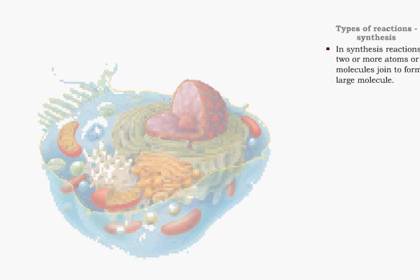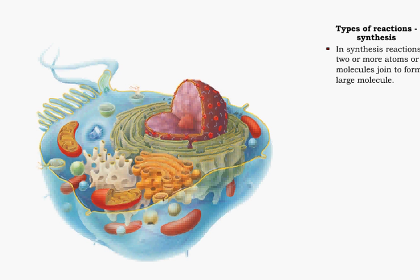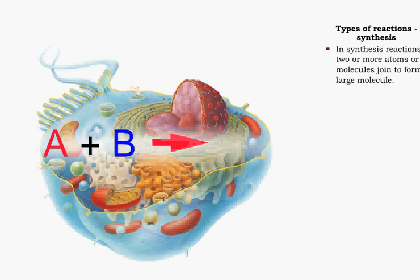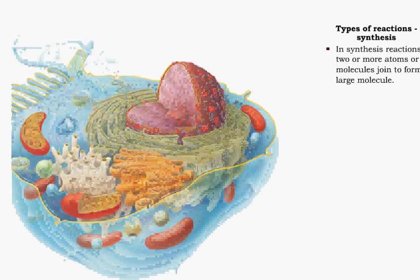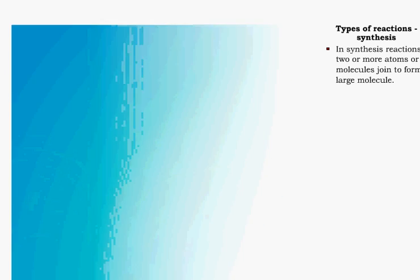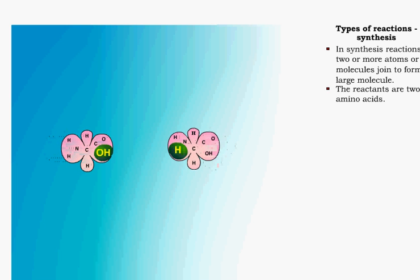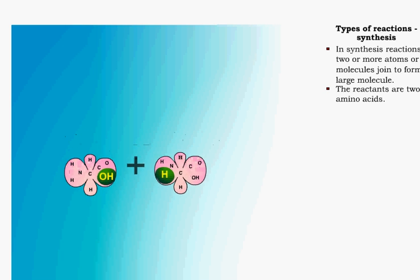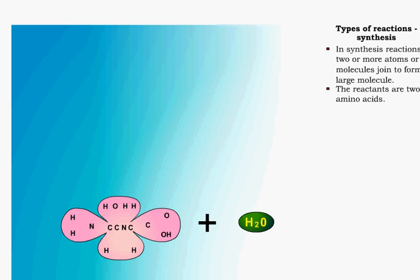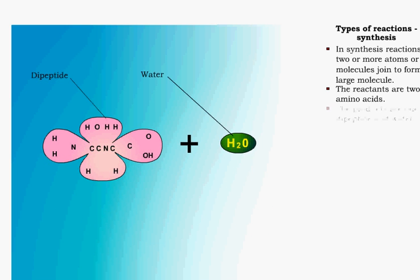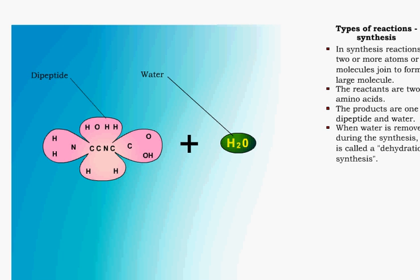A synthesis reaction occurs when two or more atoms or molecules join together to form a larger molecule. For example, two amino acids will join to form a dipeptide. This is called a dehydration synthesis because water is removed from the reactants in this reaction.